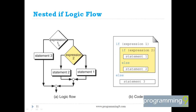If expression 1 is true, it evaluates the inner block. If expression 1 is false, it executes statement 3. Within the true block, if expression 2 is true it goes to statement 1; if false, it goes to statement 2. Finally, all paths reach the regular sequential flow of execution. The nested if has a true block and a false block inside.